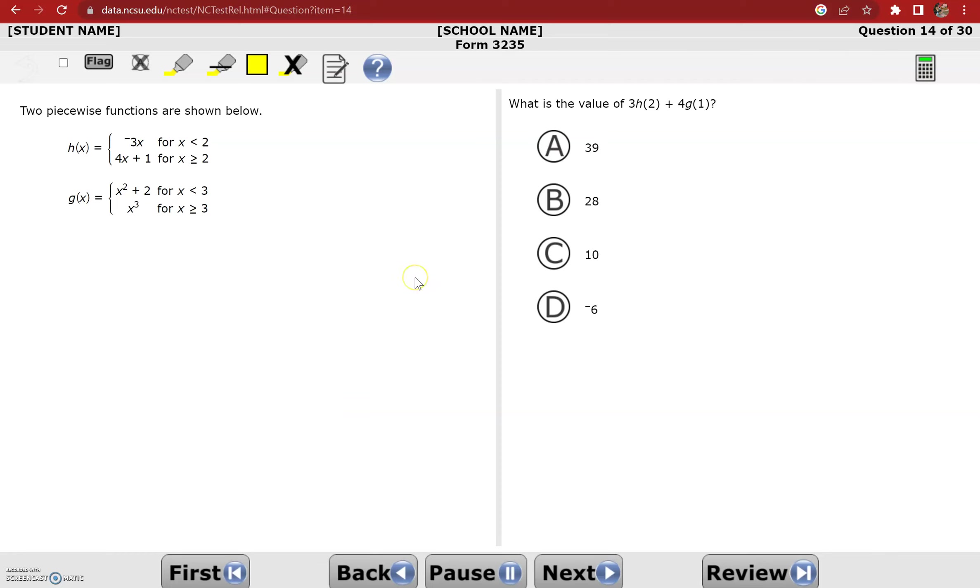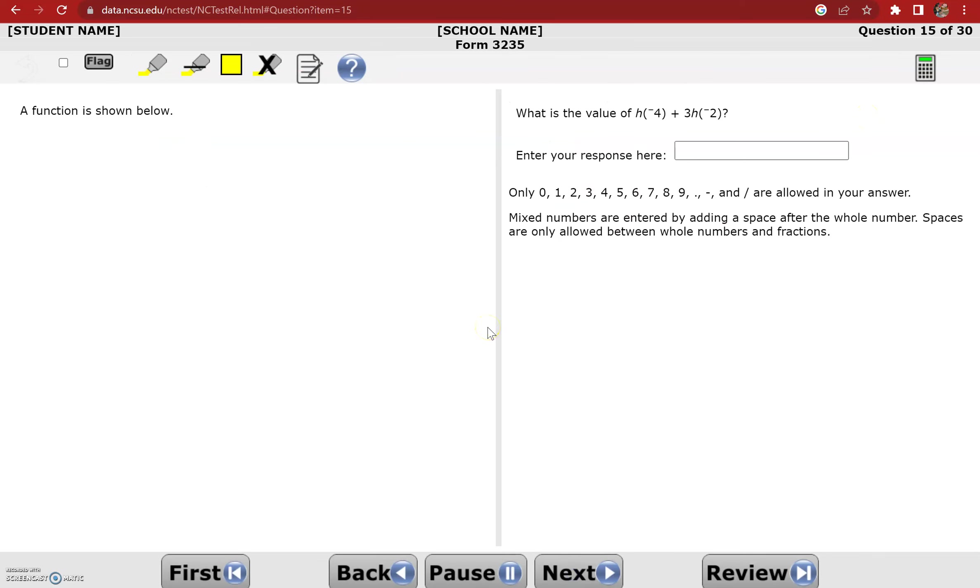All right, we are back with the Desmos strategies for the Math 3 EOC. This is an example where we have two piecewise functions, and we're asked to find the value of 3 times h of 2 plus 4 times g of 1. It would be a lot easier to do this algebraically, to be honest, if you know what piecewise functions are, which hopefully you do. But the purpose of this video is Desmos strategies, so I'll show you how you could do it using Desmos after we do this easier one first.